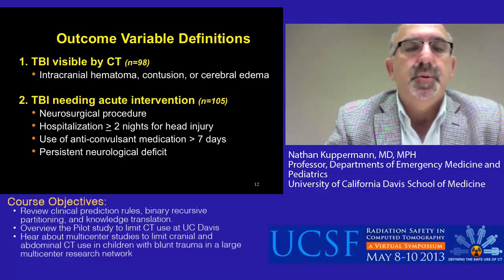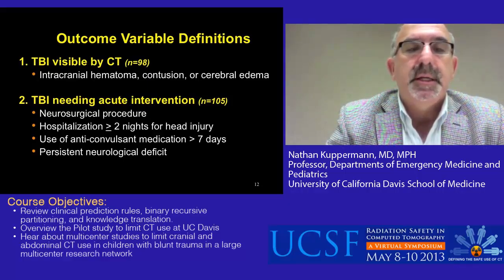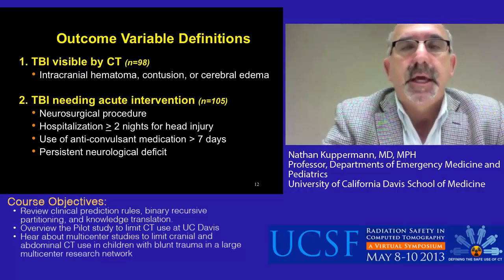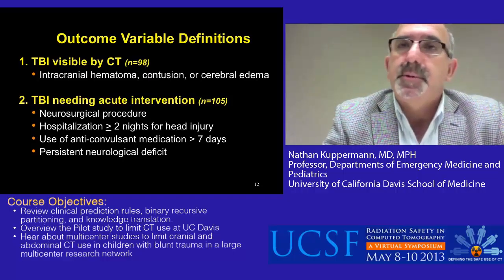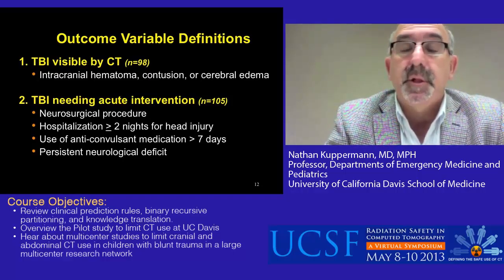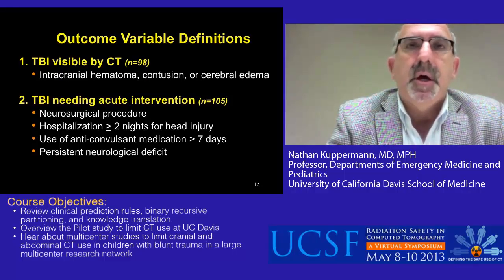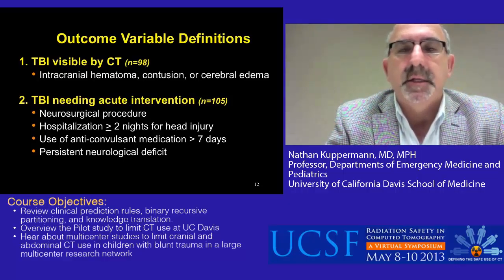We looked at two outcome variables. First was traumatic brain injury visible by CT scan. The second outcome variable was traumatic brain injury needing acute intervention, defined by neurosurgical procedure, hospitalization for two or more nights for the head injury, use of anticonvulsant medication for at least seven days, and persistent neurological deficit. That second outcome was more important to us because it was the clinically relevant outcome, as opposed to the CT outcome, which may have issues with specificity and small findings that are not clinically relevant.